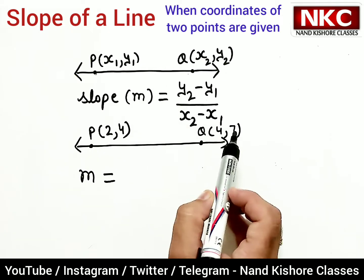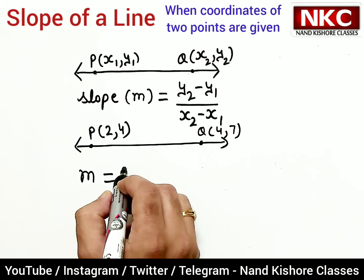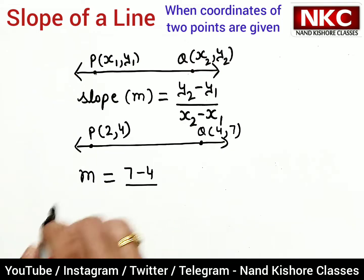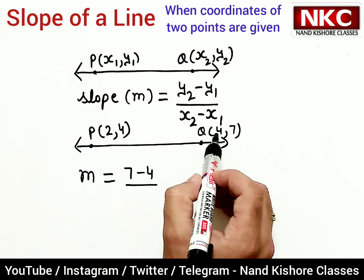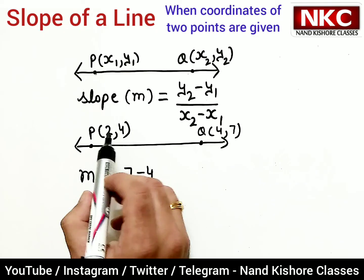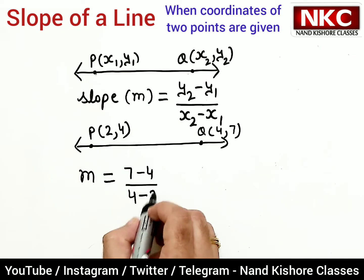So what is y2? y2 is 7, y1 is 4. Now writing the denominator: x2 is 4 and x1 is 2.